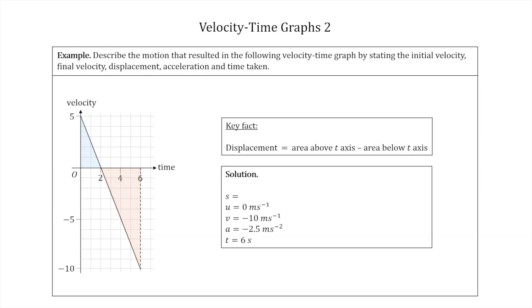For s, we calculate the area of the upper triangle: it has side lengths 2 and 5, and is a right-angle triangle, so the area is 2 × 5 ÷ 2 = 5. The lower triangle also has right-angle triangle, with side lengths 4 and 10 — we go from 2 to 6 on the time axis, so that's 4, and from 0 down to minus 10 on the velocity axis, so that's 10. Its area is 4 × 10 ÷ 2 = 20. So s = 5 − 20 = minus 15.